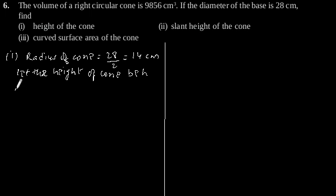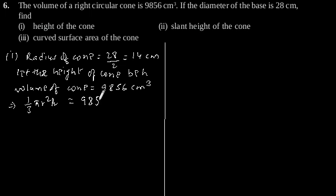It is also given that volume of the cone is 9,856 cm³. So this implies 1/3 πR²H, which is the formula of volume of cone, is equal to 9,856.